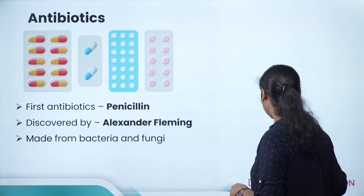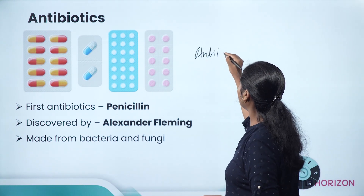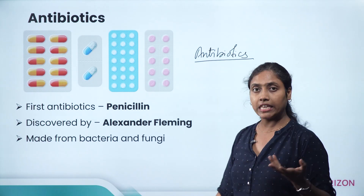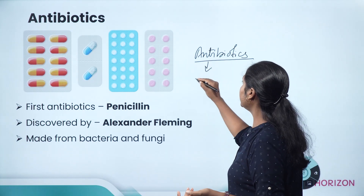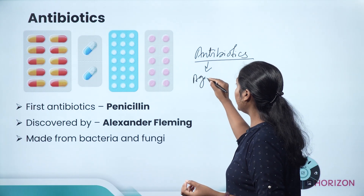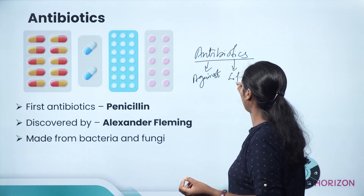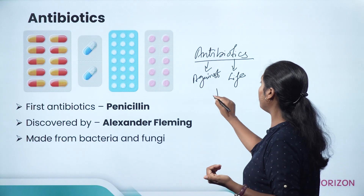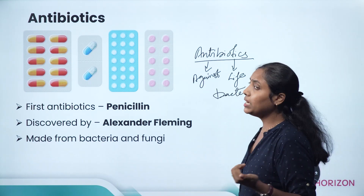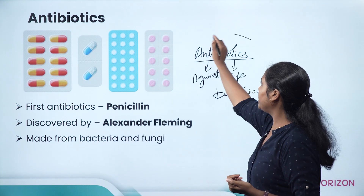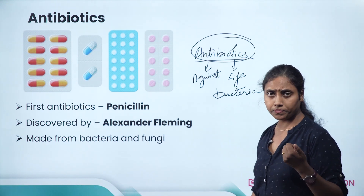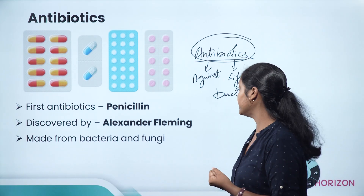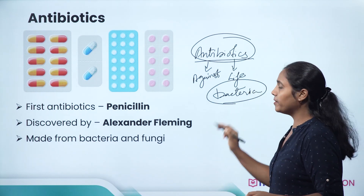The term 'antibiotics' — anti means against, biotic means life. Antibiotics are chemicals which are against the life of bacteria, not human cells. Hence, for any bacterial infections, doctors prescribe antibiotics. Antibiotics kill bacterial cells, not human cells.